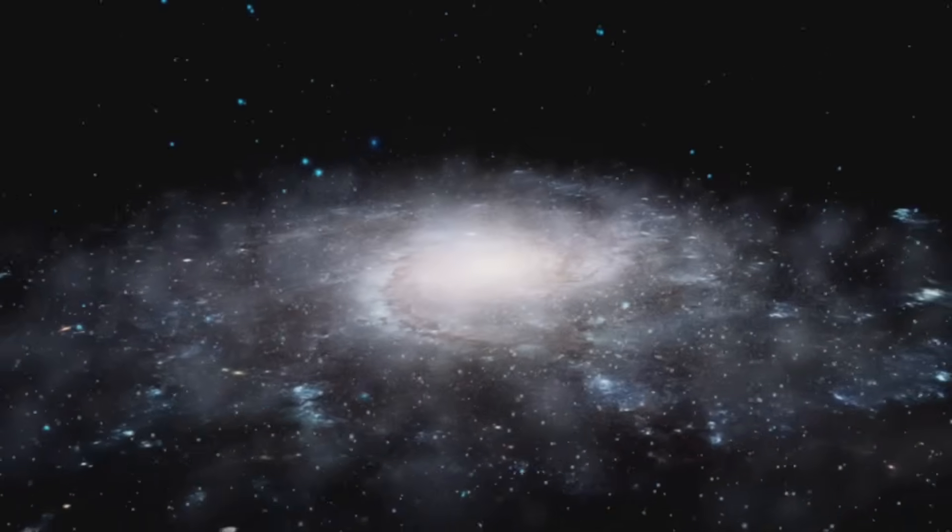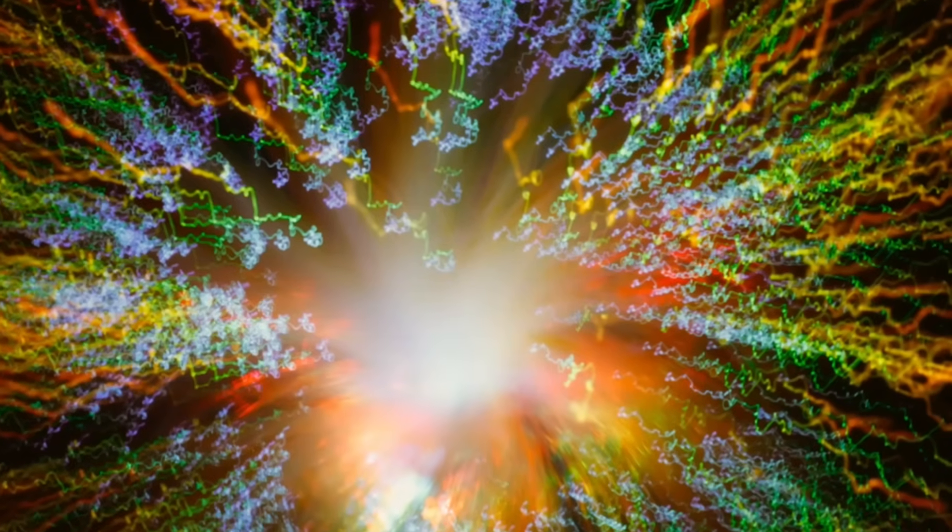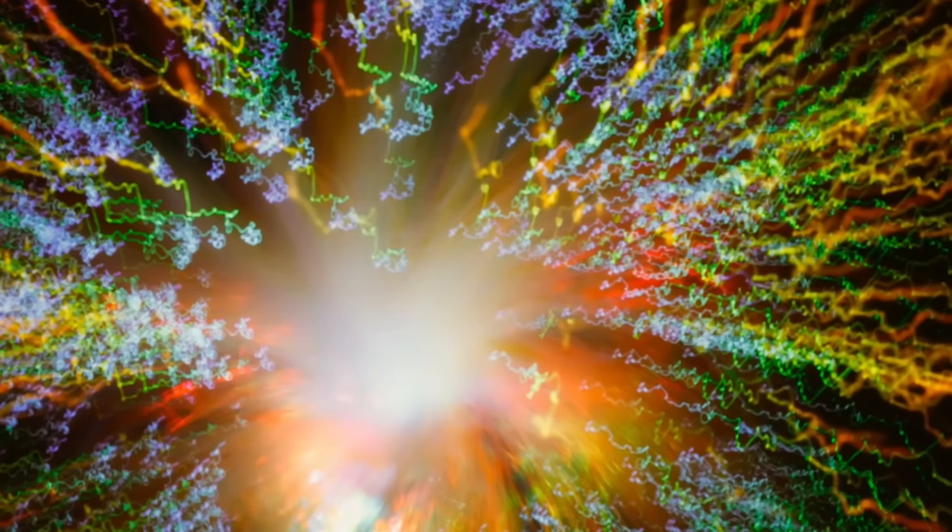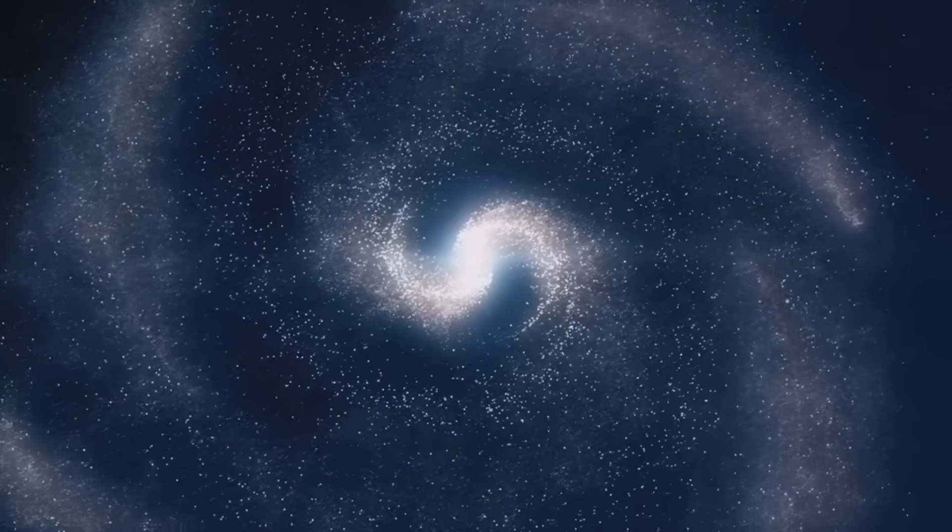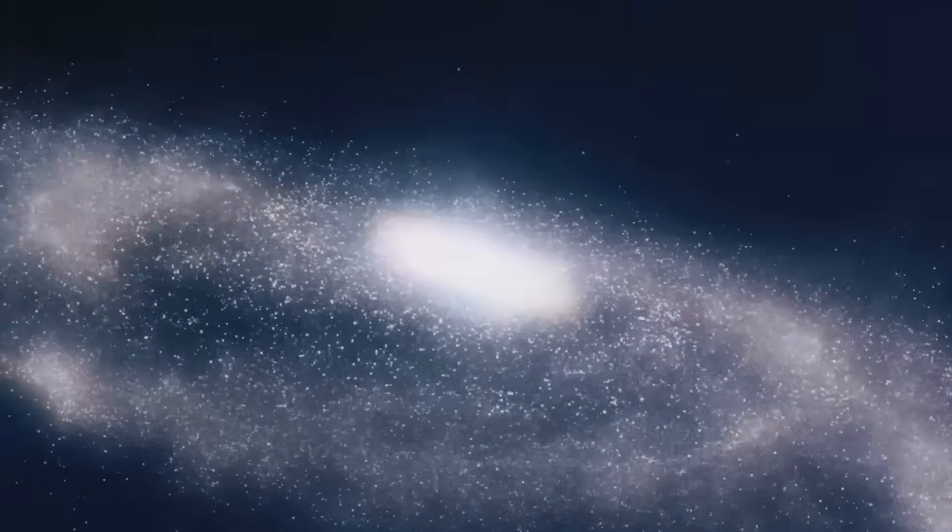Now, here's where the numbers get insane. About 10 million superclusters of galaxies exist inside this bubble. 350 billion large galaxies, each as massive as our Milky Way. 7 trillion dwarf galaxies, scattered like glitter in the dark. And around 30 billion trillion stars. If you started counting those stars, one per second, even if you started at the Big Bang, you'd still be counting today.